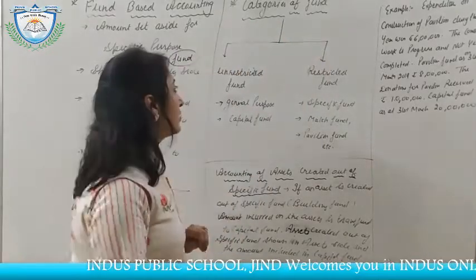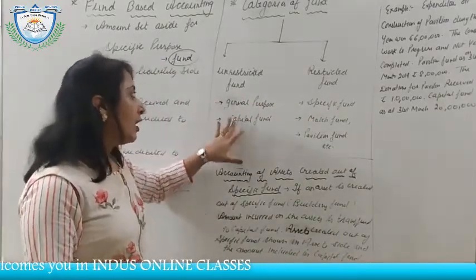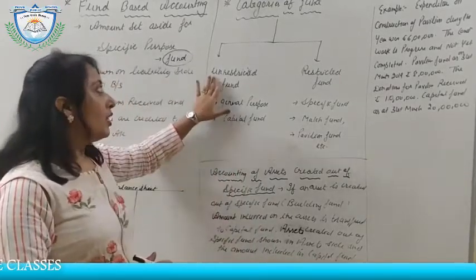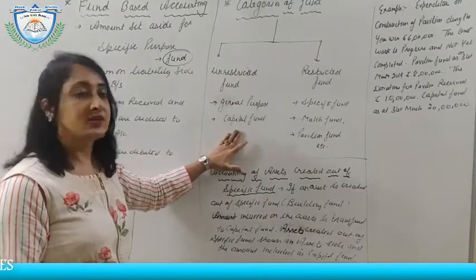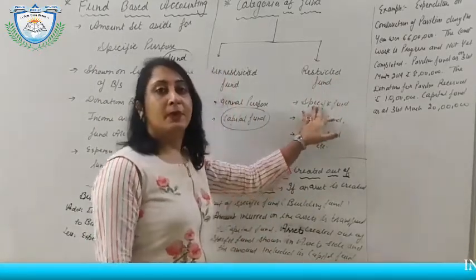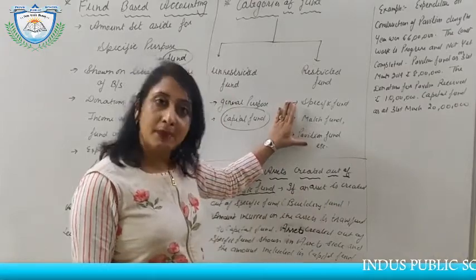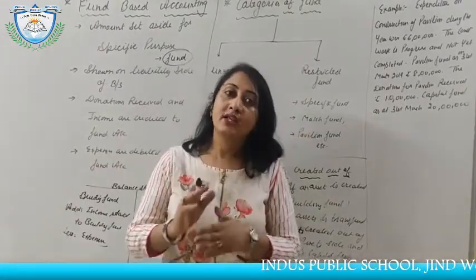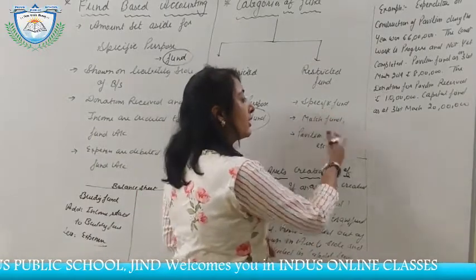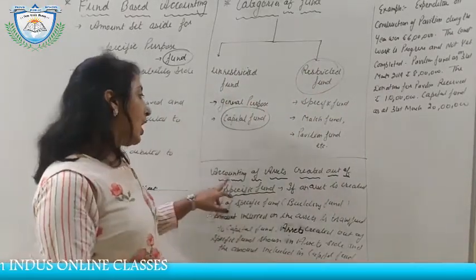There are two categories of fund. The first is unrestricted fund — this includes general and capital fund. These are funds that can be used for any purpose without restriction. The second is restricted fund — these are for a specific purpose, such as match fund, pavilion fund, library fund, or building fund. Money received under a restricted fund cannot be used for any other purpose.